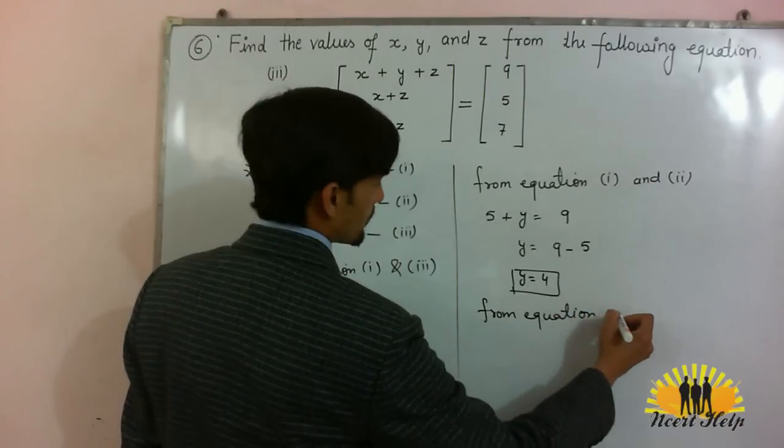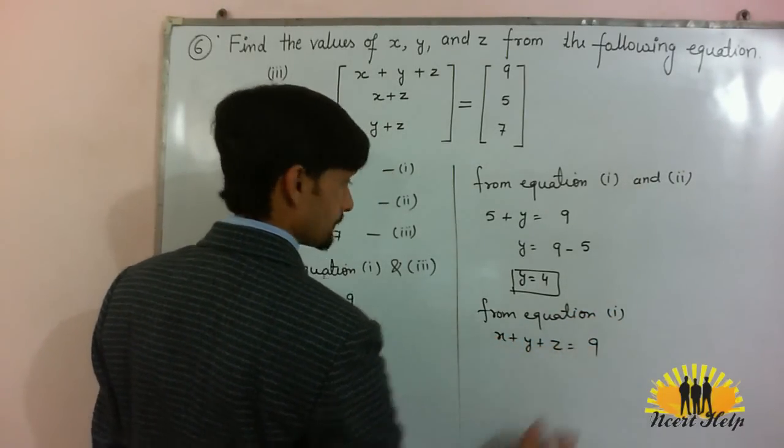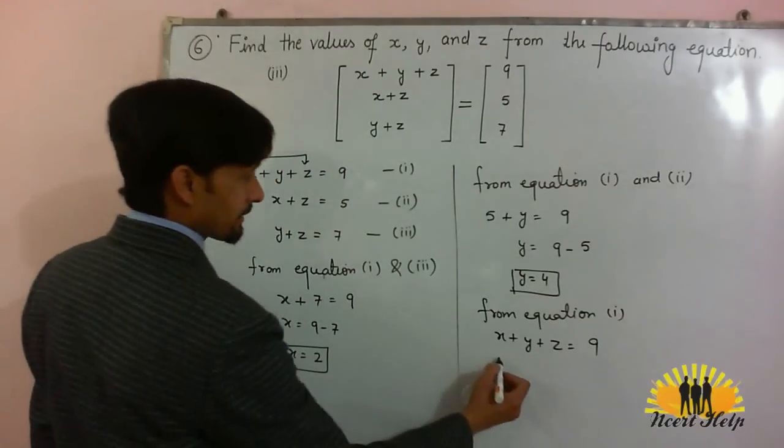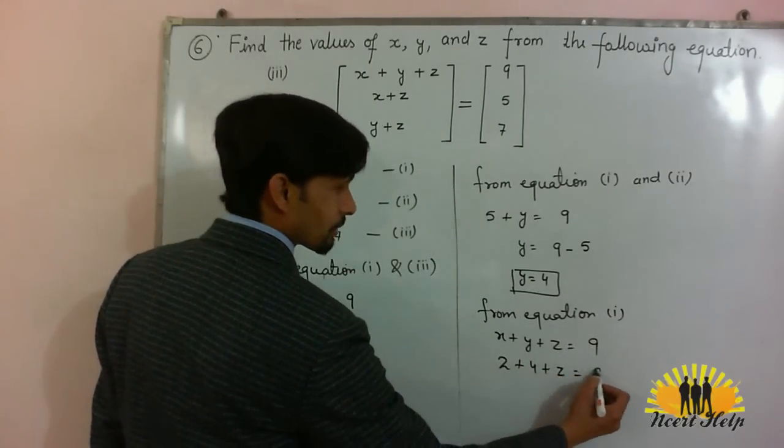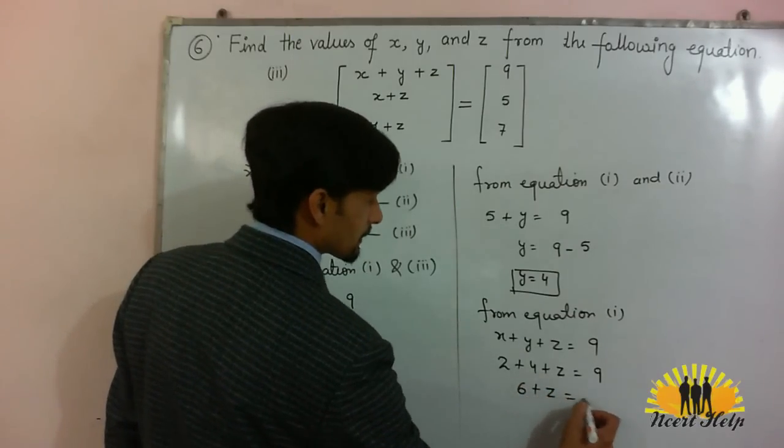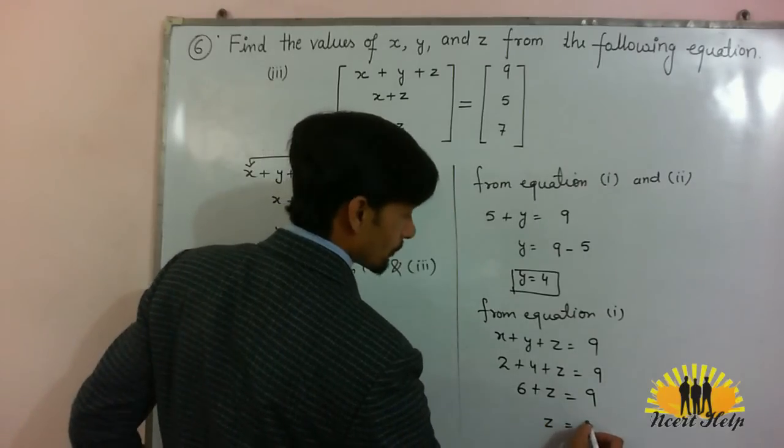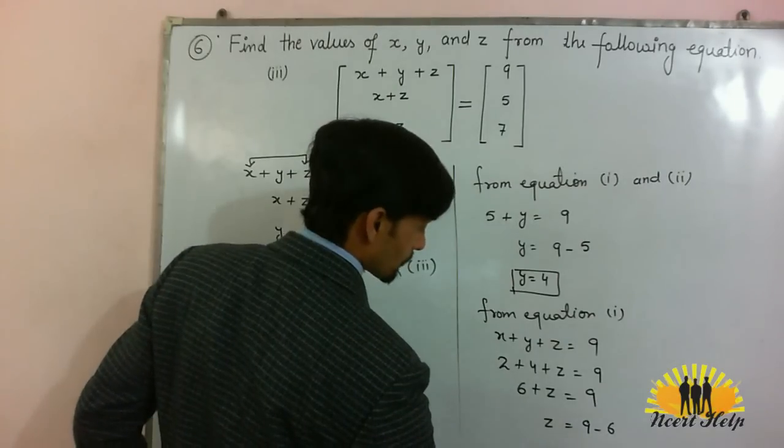From equation 1, which is x plus y plus z is equal to 9. x is 2, y is 4 plus z is equal to 9. 2 plus 4, 6 plus z is equal to 9. z is equal to 9 minus 6. z is equal to 3.